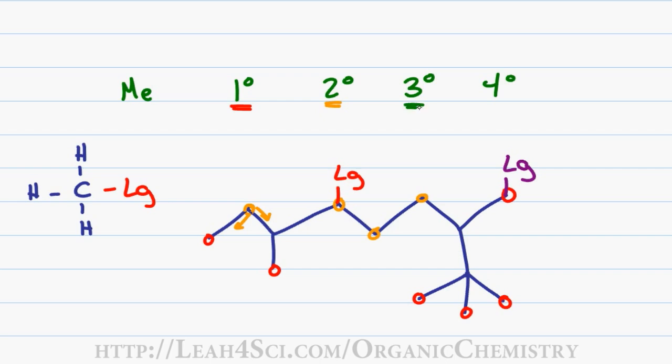A tertiary carbon is attached to three other carbons. In this molecule we have two tertiary carbons. If I place a leaving group on the tertiary carbon, it's considered a tertiary leaving group. A quaternary carbon has four other carbons attached to it. According to the octet rule, a carbon can only have four bonds, so a quaternary carbon cannot hold the leaving group, however you will see it participating in reactions if there's potential for a methyl shift or carbocation rearrangement.